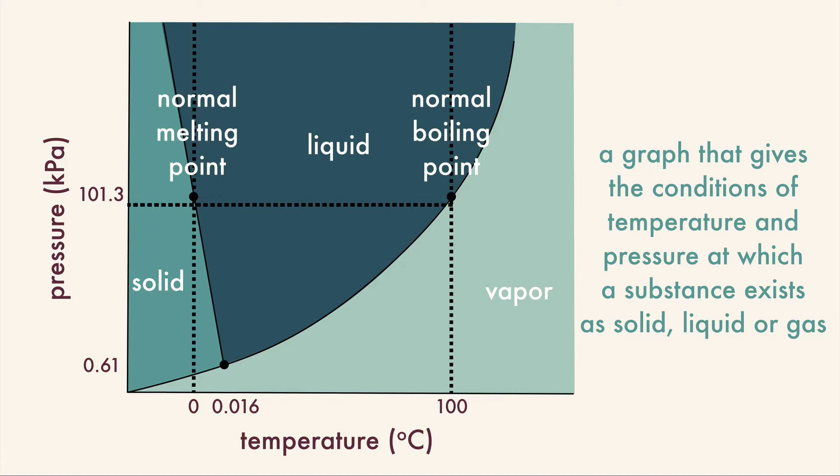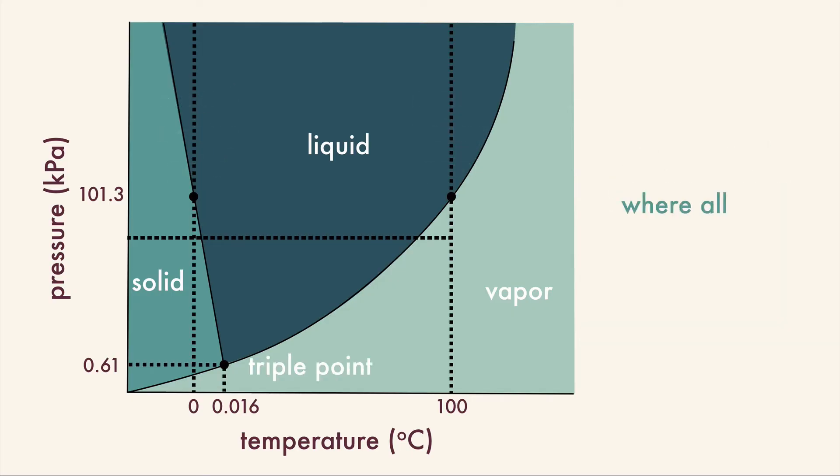But at lower pressure, the melting point will be higher and the boiling point will be lower. There's also a place called the triple point, where all three phases exist in equilibrium.